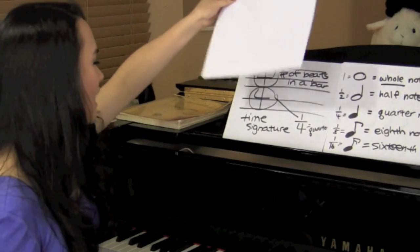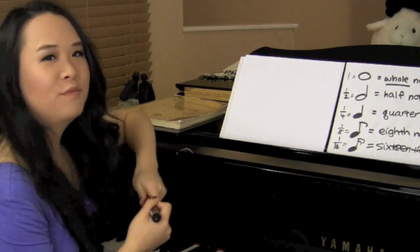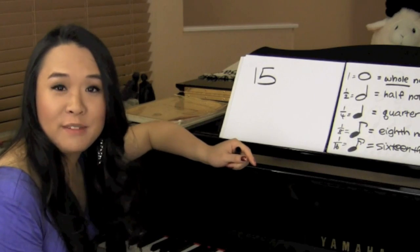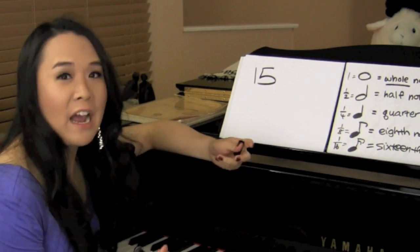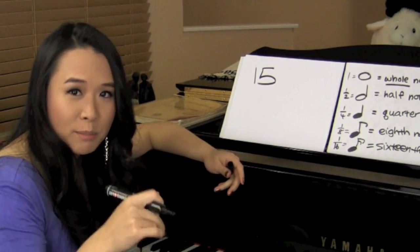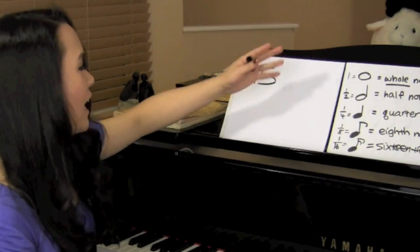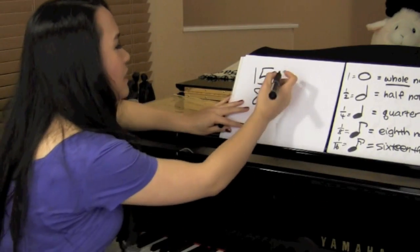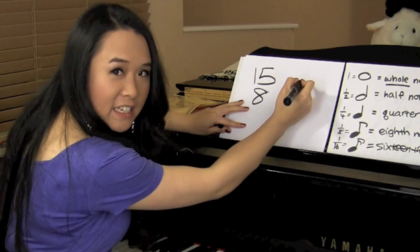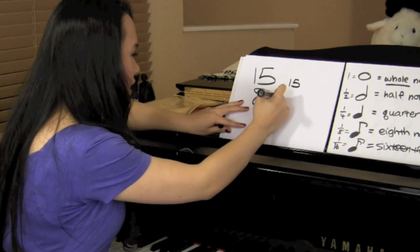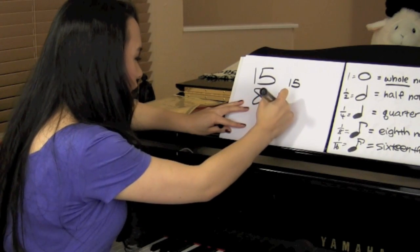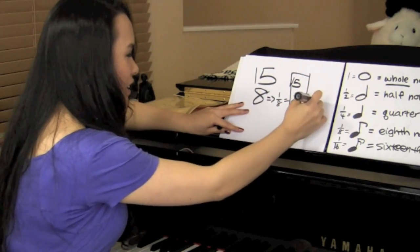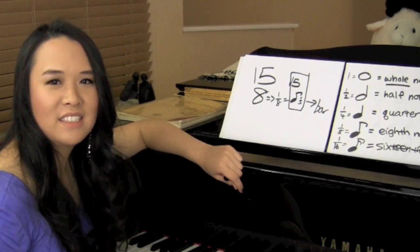Let's pick a number — fifteen. That means there are fifteen beats in a bar. Now, what kind of beat is it? That's what the bottom number will tell you. Let's pick eight. So what does that mean? That means there are fifteen eighths — because eight is the denominator, which means this kind of note — fifteen eighths in a bar. Make sense?